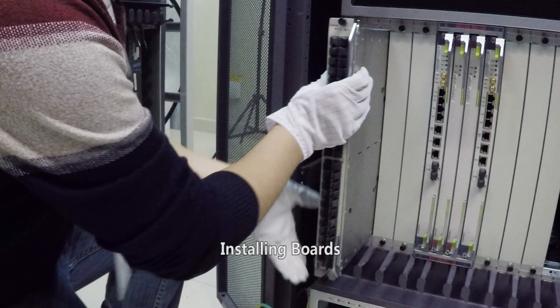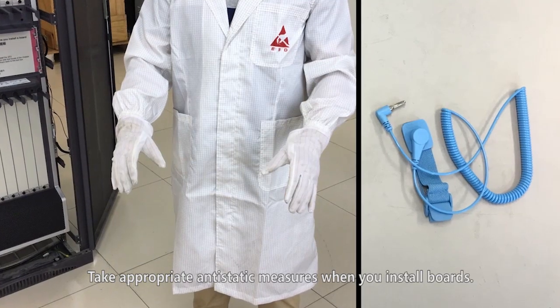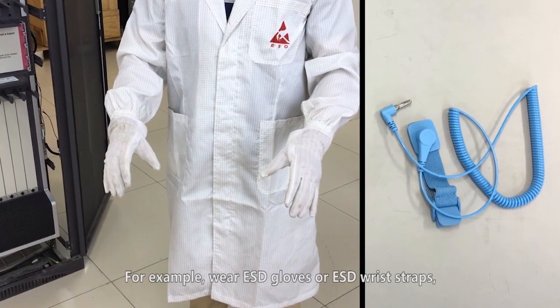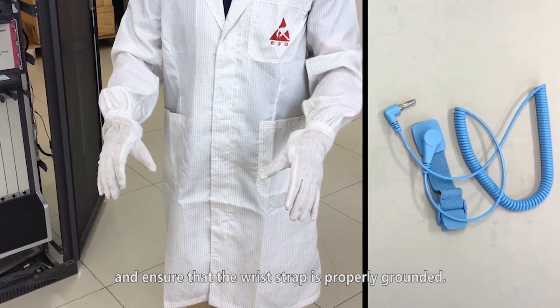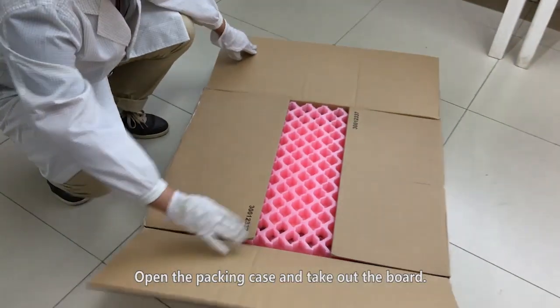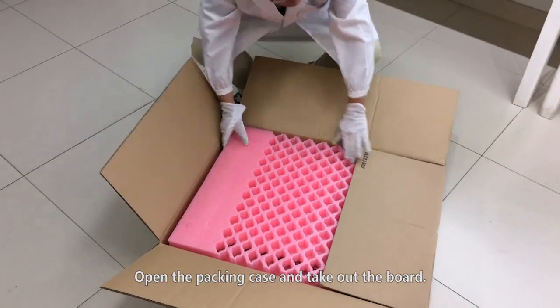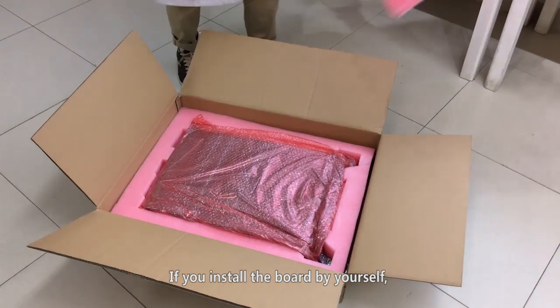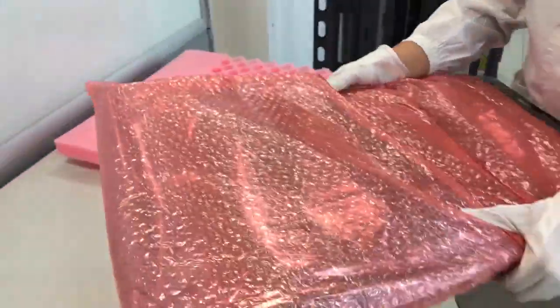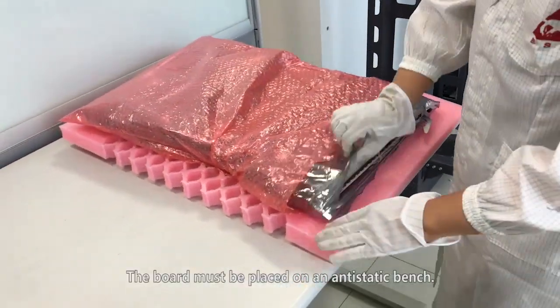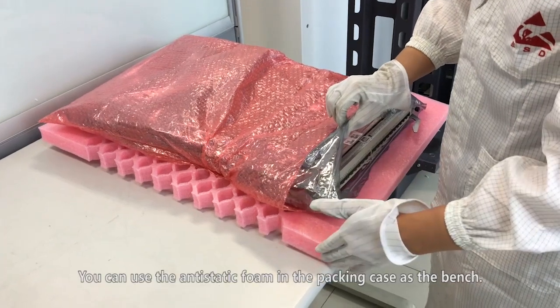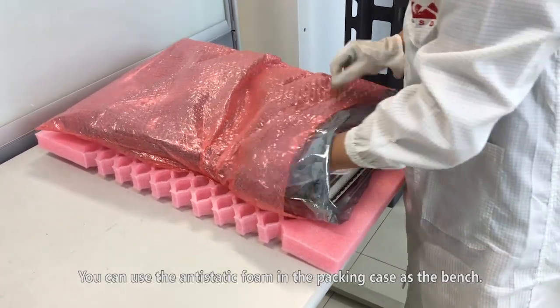Installing boards. Take appropriate anti-static measures when you install boards. For example, wear ESD gloves or ESD wrist straps and ensure that the wrist strap is properly grounded. Open the packing case and take out the board. If you install the board by yourself, place the board on the working bench before unpacking the board. The board must be placed on an anti-static bench. You can use the anti-static foam in the packing case as the bench.